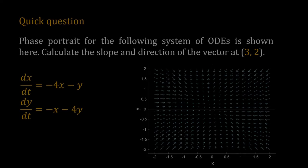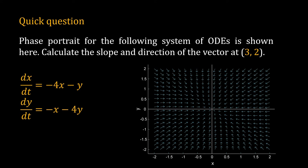Here is a question for you. We are drawing the phase portrait of a given system of ODEs. Find the slope and direction of the vector at x equal to 3 and y equal to 2.